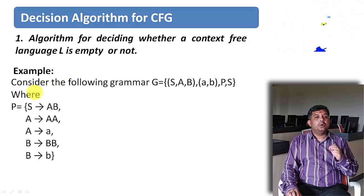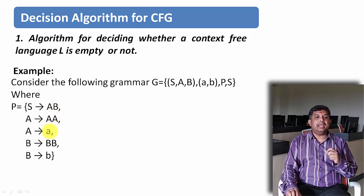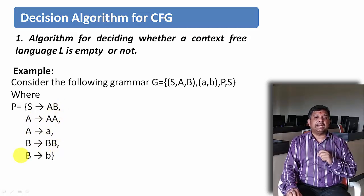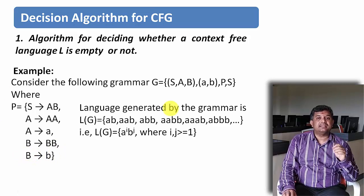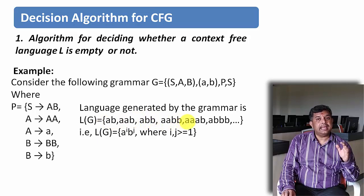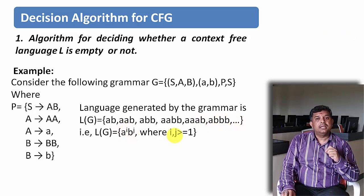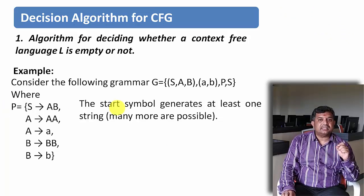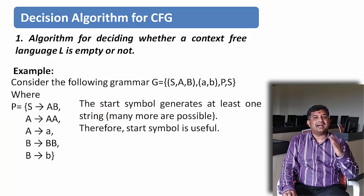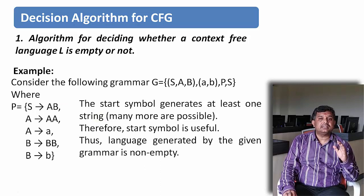Consider this grammar where the productions are S derives AB, A derives AB, A derives AA, A derives A, B derives B, and B derives B. The language generated by this grammar includes strings like AB, AAB, AB, ABB, AABB, AAAB, ABBB, and so on — that is, A to the power i, B to the power j, where i and j are each at least one. Here the start symbol generates at least one string, and therefore the start symbol is a useful symbol. Thus the language generated by the given grammar is not empty.